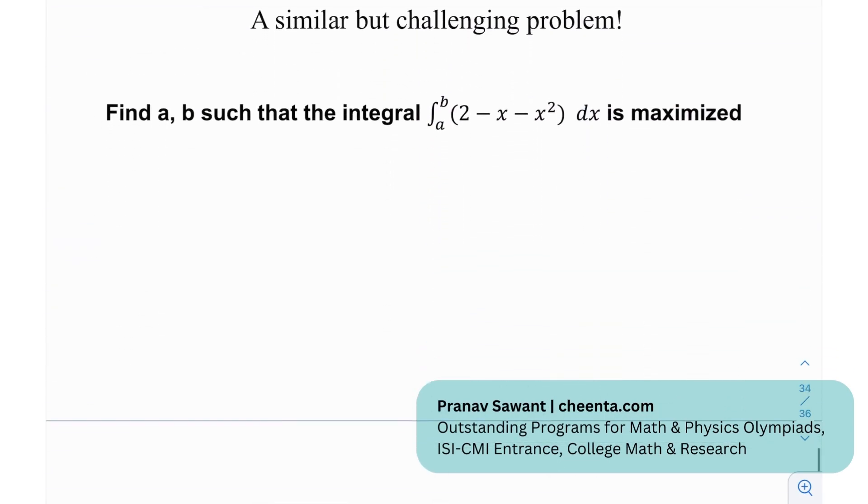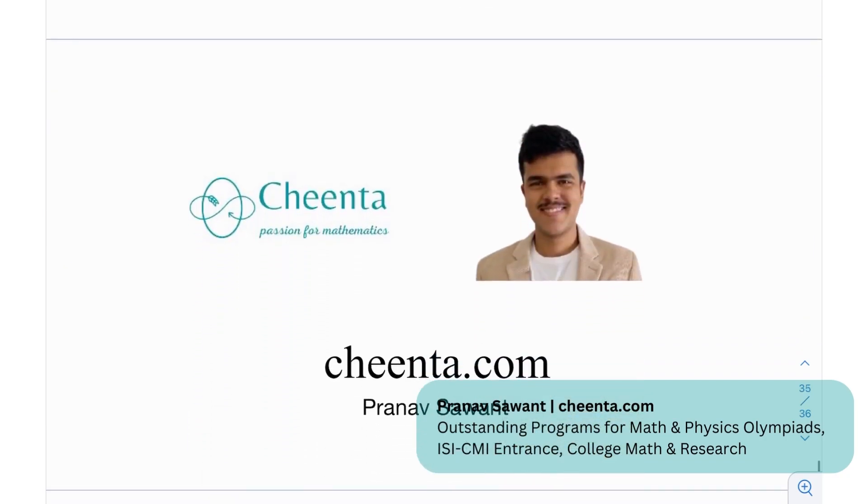This is a similar but challenging problem. Find a, b such that the integral from 0 to 1 of (2 - x - x²) dx is maximized. Yeah, maybe I'll go at that. If you're able to solve it, let me know in the comment section. Until then, I'll see you in the next video. Thank you very much. Bye bye.